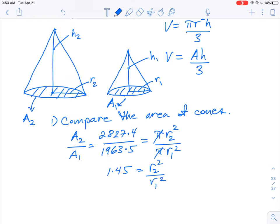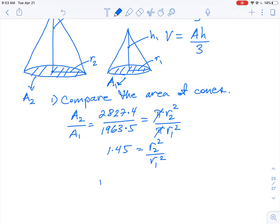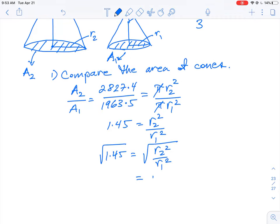Now at this point, we can simplify and solve for one of the radiuses because it's a square function. We'll undo that by taking the square root of both sides. And this is going to be equal to R2 over R1 is equal to approximately 1.20. So this tells us that the radius 2 is bigger by a factor of 1.20 times R1.